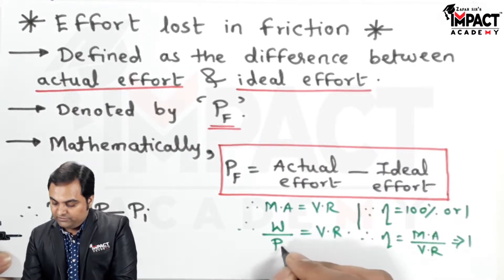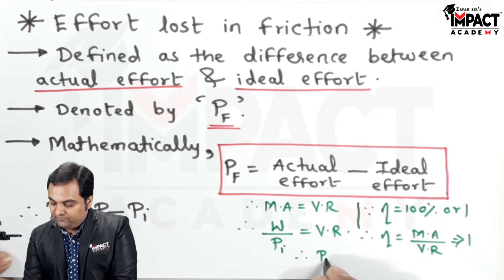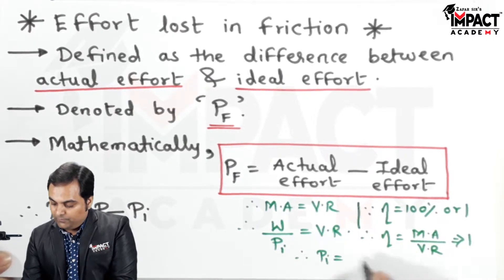Since we want ideal effort that would be P suffix I, so P suffix I would be W upon Vr.